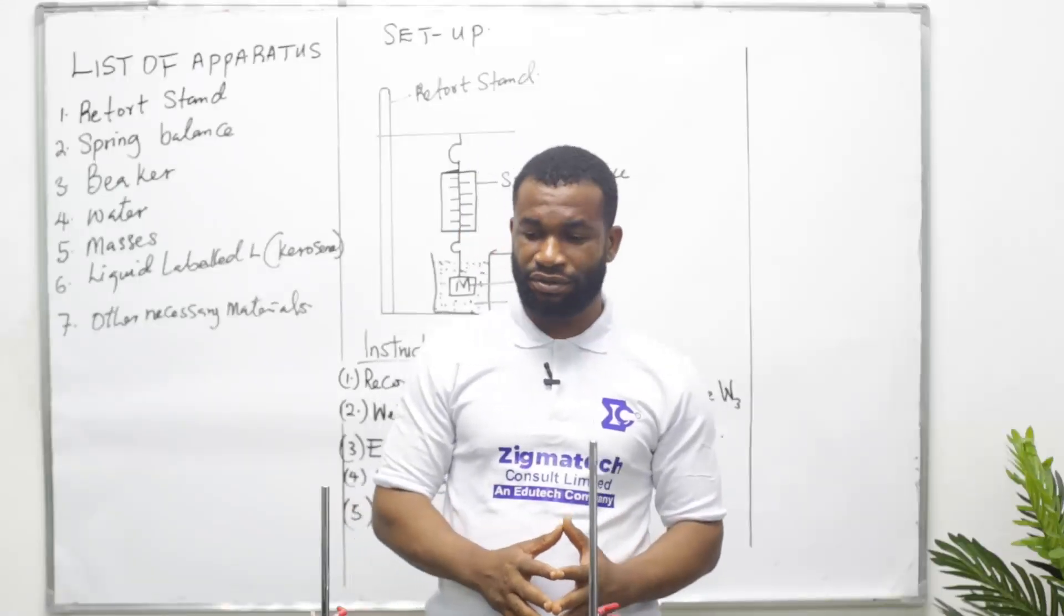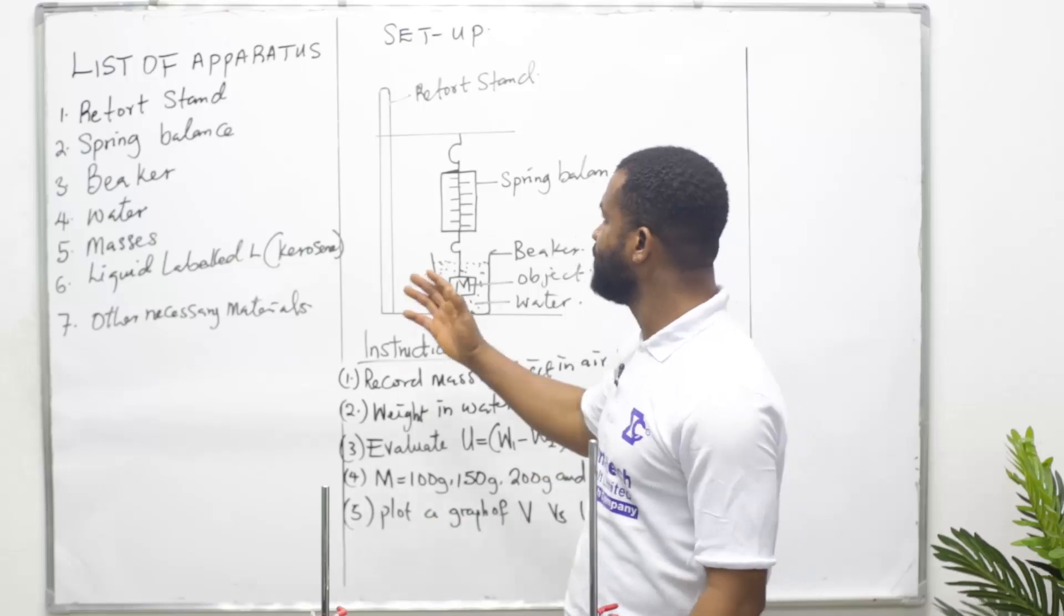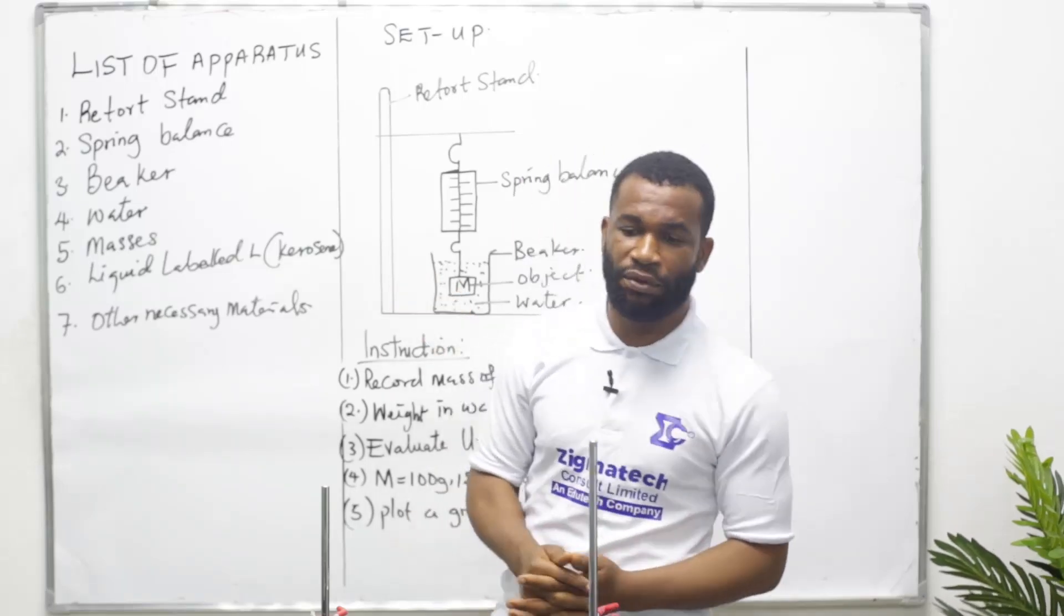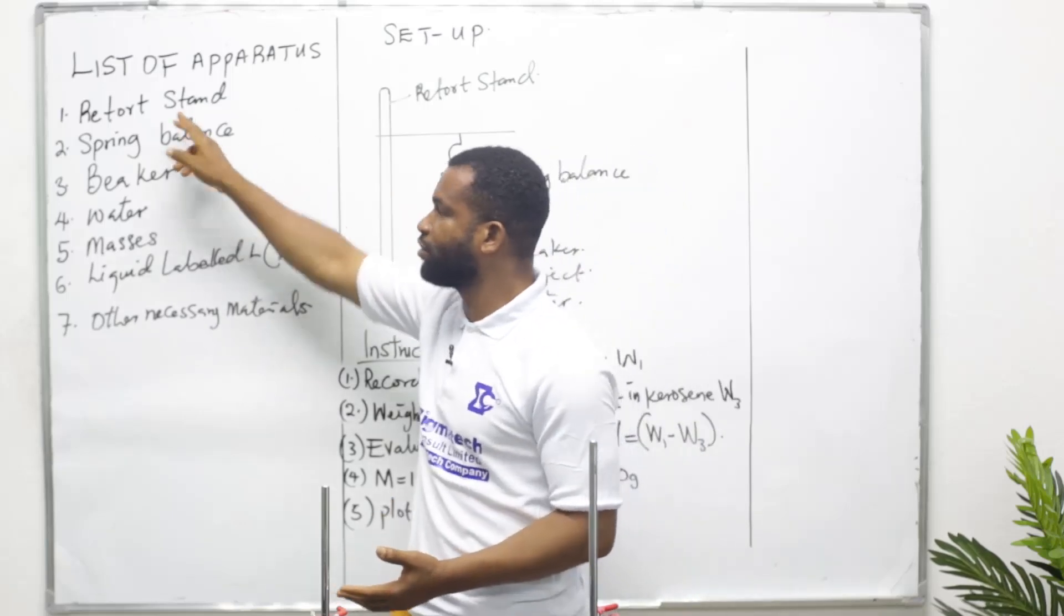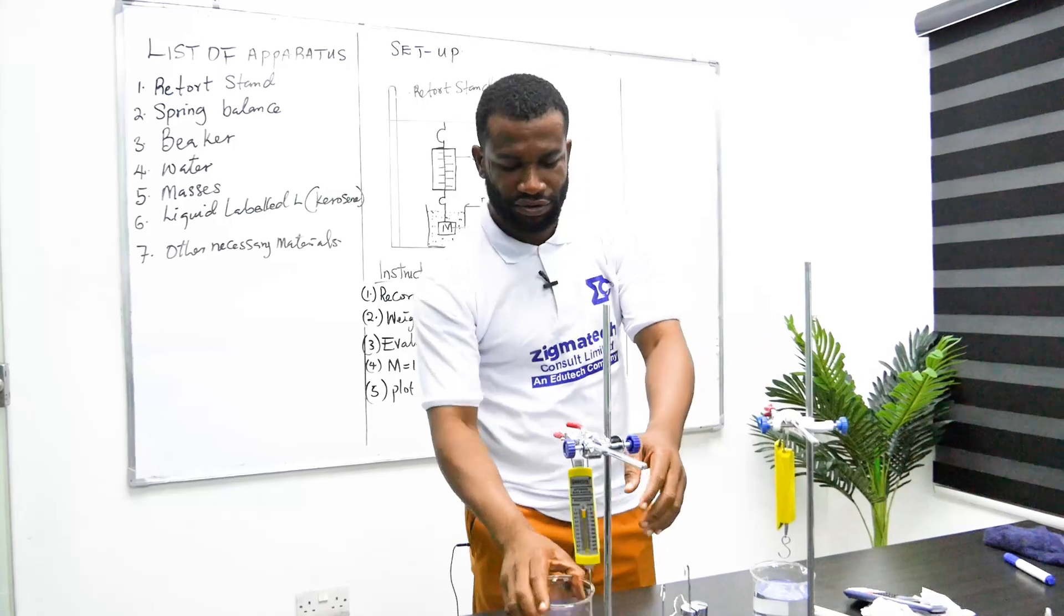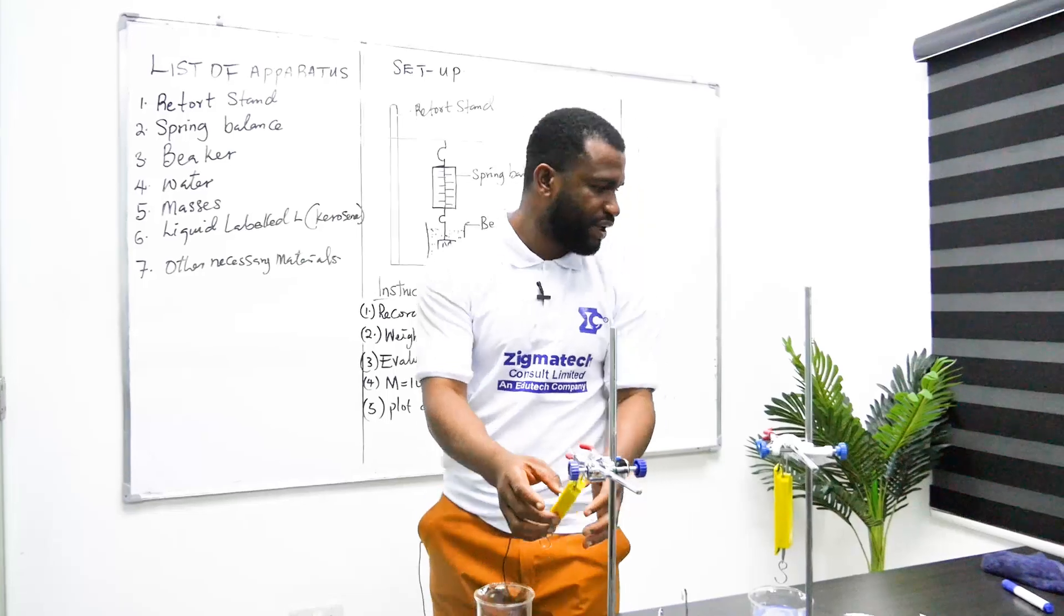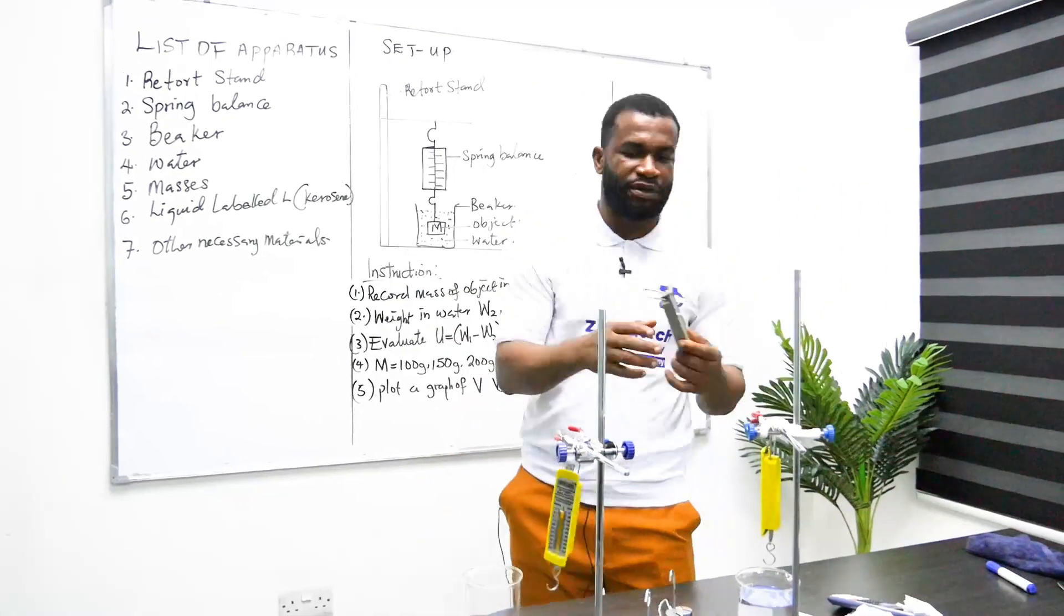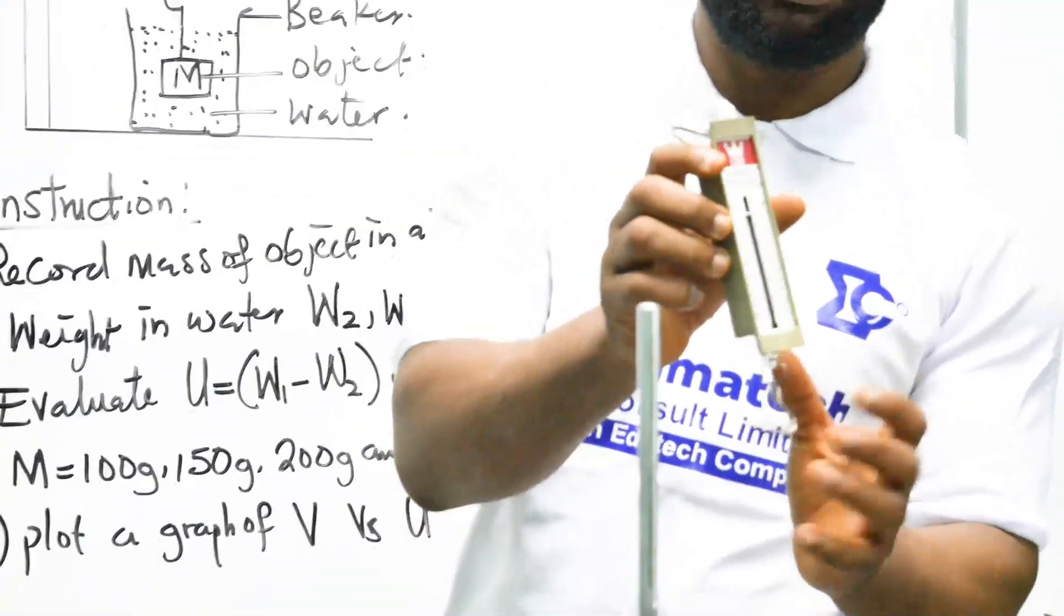Welcome to this physics practical. In today's class we are going to be looking at number one physics experiment for WAEC 2024. The list of apparatus given to us includes a retort stand, and this is the retort stand, sometimes called a support. The next one is spring balance.